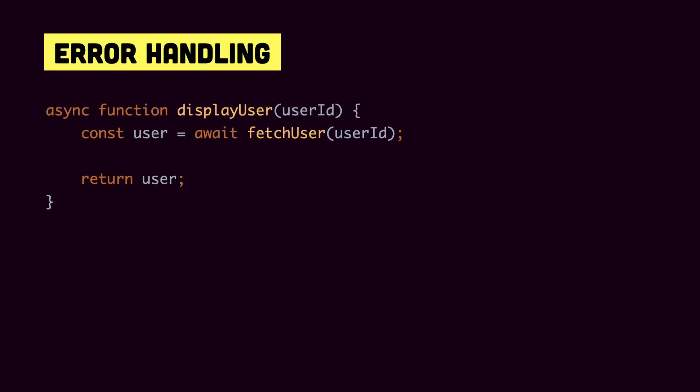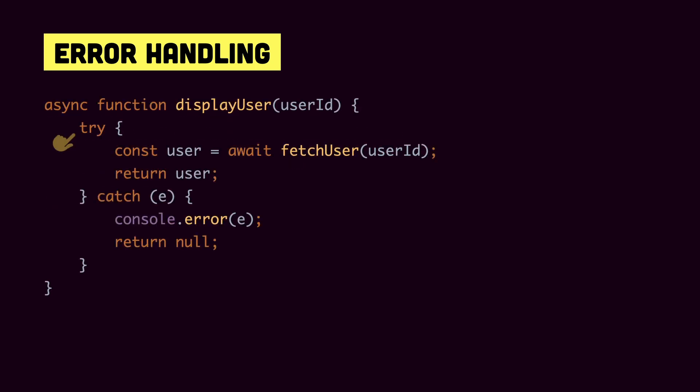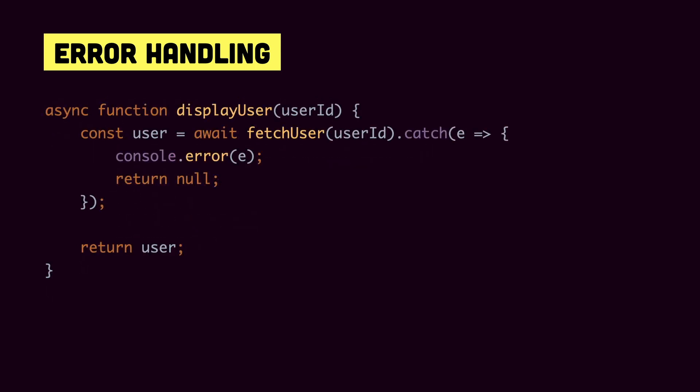Finally, we have error handling. Say we have a function called displayUser making a call to fetch a user from an API, and that fetch call fails due to network issues or user not found. It will be thrown as an exception, similar to synchronous code. To catch this error, wrap the function in a try/catch block — you get the error in the catch block, log it, and return null. Alternatively, you can write it as await fetchUser with .catch() from the promise version, logging the error and returning null. If fetchUser succeeds, you get the user object; if not, you get null from the catch.